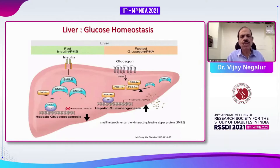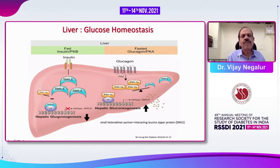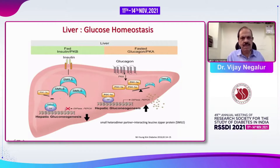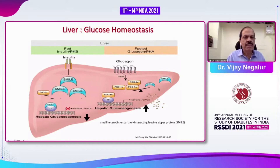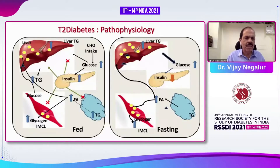At the tissue level in the fed state, insulin acting on the liver activates the SMAD transport receptors. This transcription factor acts on the DNA, inhibiting G6Pase and PEPCK, thereby reducing hepatic gluconeogenesis. The reverse occurs when glucagon sits on the liver — a seven-pass or serpentine receptor — which activates PGC1-alpha, and that inhibits the SMAD transcription factor. PGC1-alpha increases hepatic gluconeogenesis. That's the interplay between SMAD and PGC1-alpha which regulates glucose.